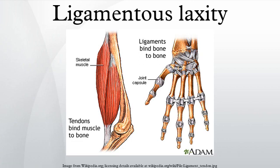While ligamentous laxity may be genetic and affect an individual from a very early age, it can also be the result of an injury. Injuries, especially those involving the joints, invariably damage ligaments either by stretching them abnormally or even tearing them. Loose or lax ligaments in turn are not capable of supporting joints as effectively as healthy ones, making the affected individual prone to further injury as well as compensation for the weakness using other parts of the body.